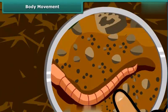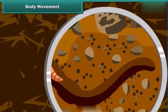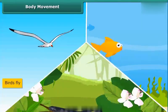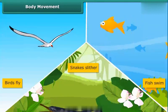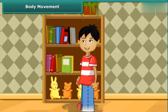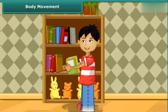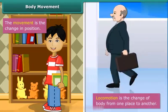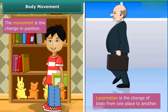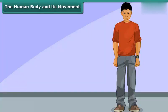As we walk or run, earthworms creep or crawl, birds fly, fish swim, and snakes slither. Other than these movements, we can also see that we move various parts of our body — like when we pick up a book, we move our hand. Movement is the change in position, while locomotion is the change of body from one place to another.